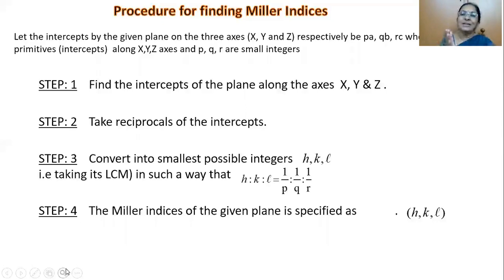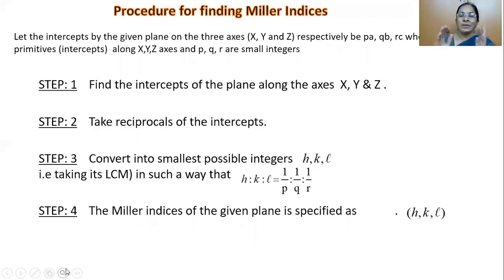Step 4: write the Miller Indices of the given plane, specified as (H, K, L) within parentheses. Only four steps are needed. Study the plane in the given crystal, locate the intercepts made by the plane on the X, Y, Z axes, take the reciprocal of the intercepts, convert them into the smallest numbers by finding the LCM, and write those values within the parenthesis — that gives the Miller Indices of the given plane in a crystal. Let us now discuss some examples.